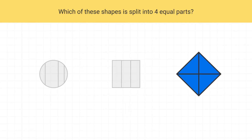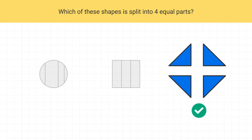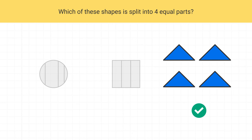What about this last one? How many parts is this shape split into? This shape is split into one, two, three, four parts. Are the parts equal? Yes. All of the parts of this shape are the same size. This shape is split into four equal parts. This is our correct answer.